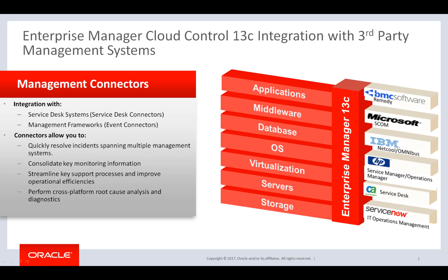So what does an EM connector allow you to do? In essence, it allows you to forward the events and incidents detected by Enterprise Manager to an outside event management or service desk system. This allows you to see incidents and monitoring information spanning across multiple systems in one location. Support processes are streamlined because there is one help desk system to triage. Having all the relevant information in one place allows you to conduct cross-platform root cause analysis and diagnosis in a more efficient manner.